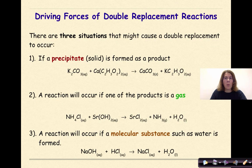Driving forces of double replacement reactions. There are three situations that might cause a double replacement reaction to occur. If a precipitate, otherwise known as a solid, is formed as a product. So if we look at this example, we have K2CO3 plus Ca(C2H3O2)2 forming CaCO3, which is a solid, and K(C2H3O2), which is soluble. Since this solid is formed, the reaction will be driven forward and go to completion.